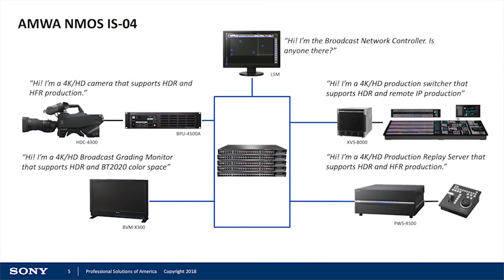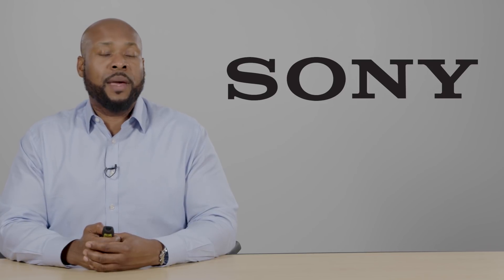From a visual perspective, it'll look something like this. You have a broadcast network controller, like the LSM from Sony, connected to your COTS network architecture, made up of your network switches. When an endpoint device, like a studio camera, a production switcher, or a production monitor, is connected to that topology, they announce the type of device that they are, their manufacturer, and what resources they have available. For example, a studio camera may announce that it is a 4K HD camera capable of supporting high dynamic range and high frame rate production. A production switcher may announce that it is a 4K capable switcher that also supports high dynamic range production and remote IP production as well.